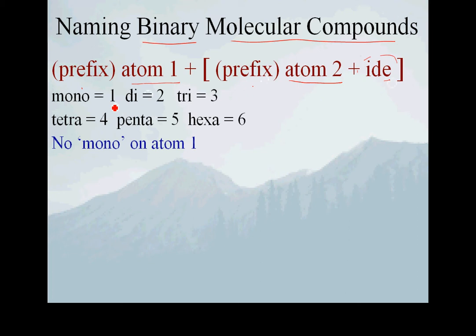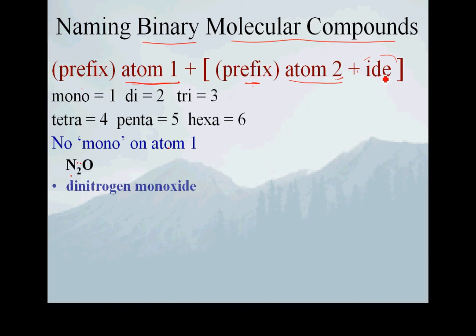The prefix tells us exactly how many of that element are in the formula. Naming binary molecular compounds is by far the easiest naming convention — all you have to do is read the letters. For N₂O: the first element is nitrogen, and the prefix for two is di, so the first word is dinitrogen. The second atom is oxygen; there's only one, so its prefix is mono, and the whole thing ends in -ide. So this is dinitrogen monoxide.